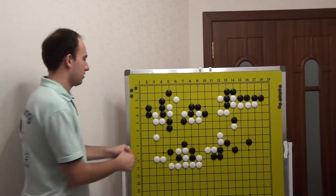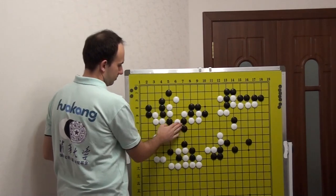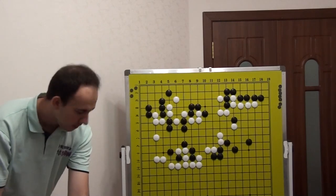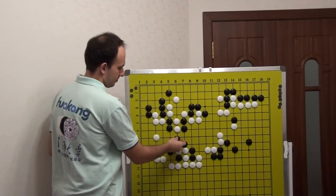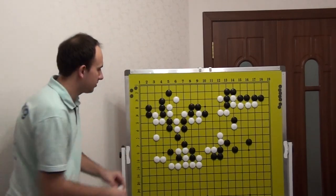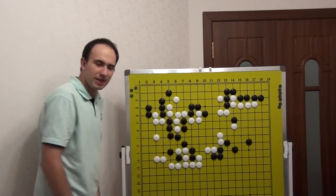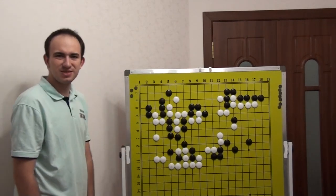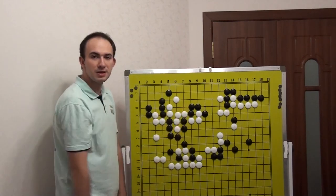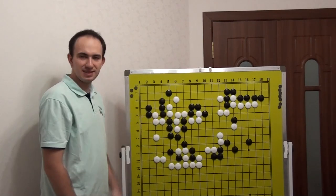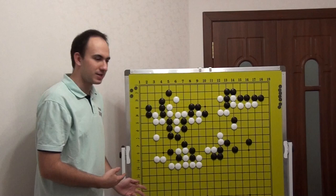We can see this one is not so good for White. Black got many liberties around and White doesn't have so many, so like this White is dead.